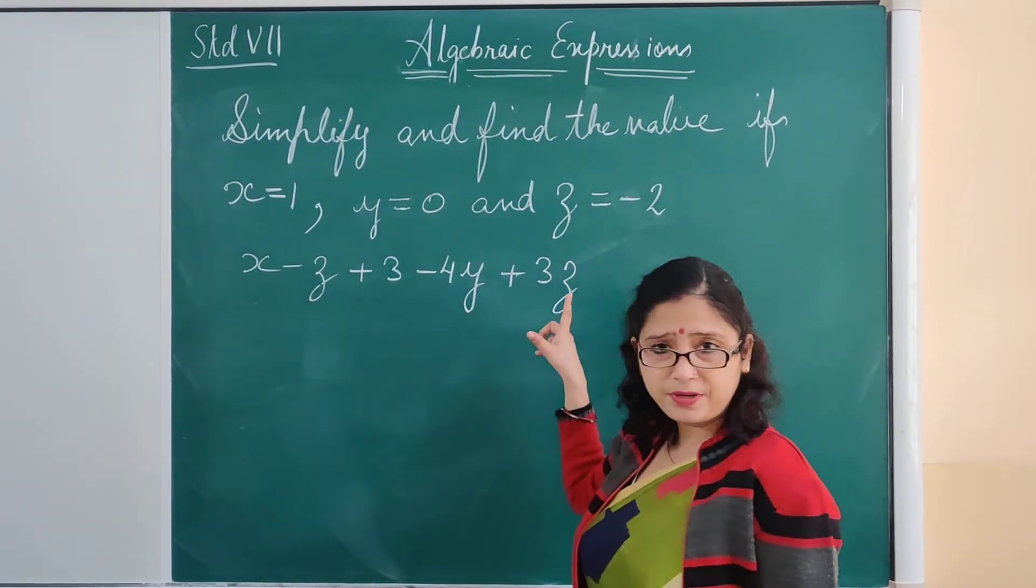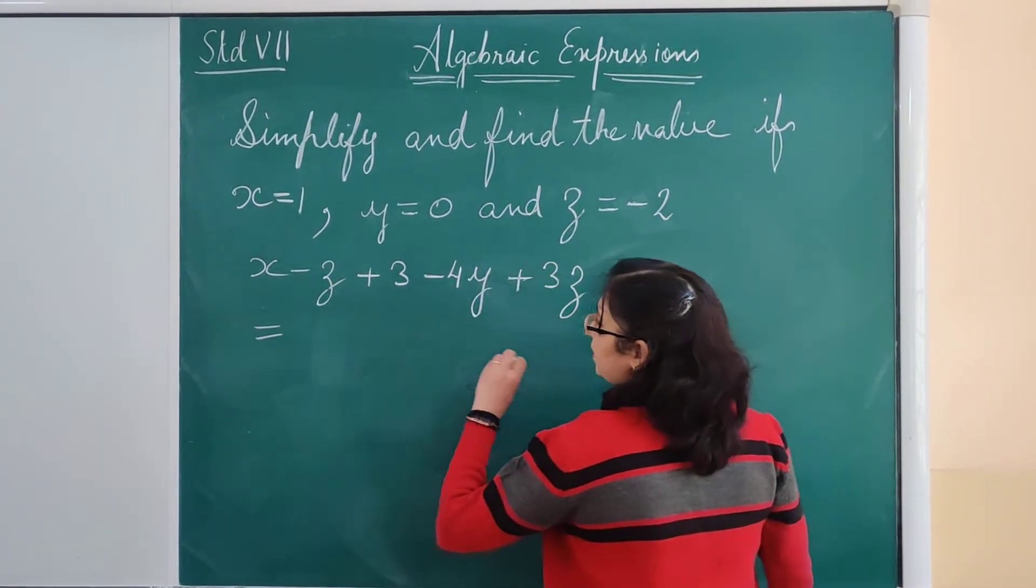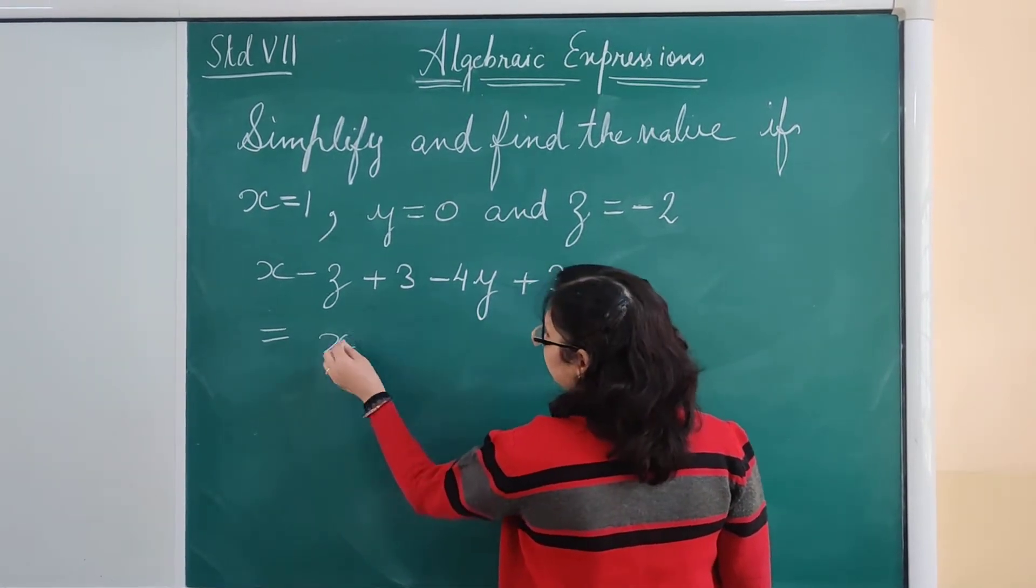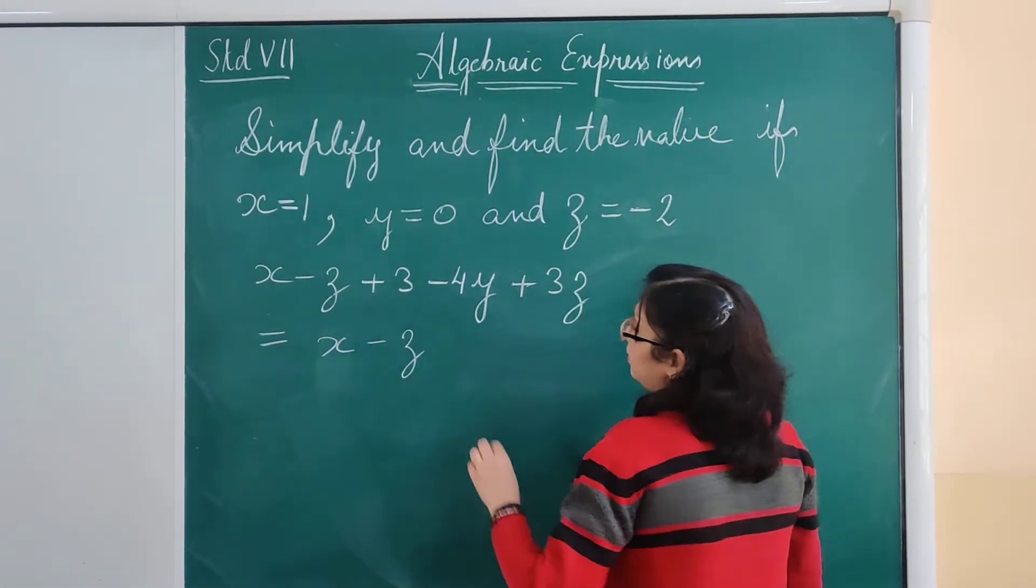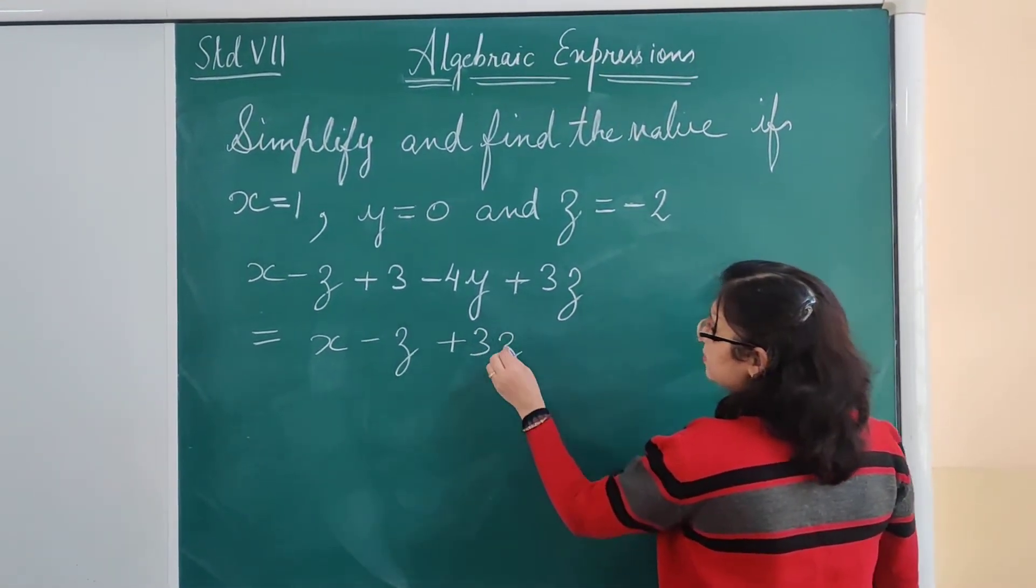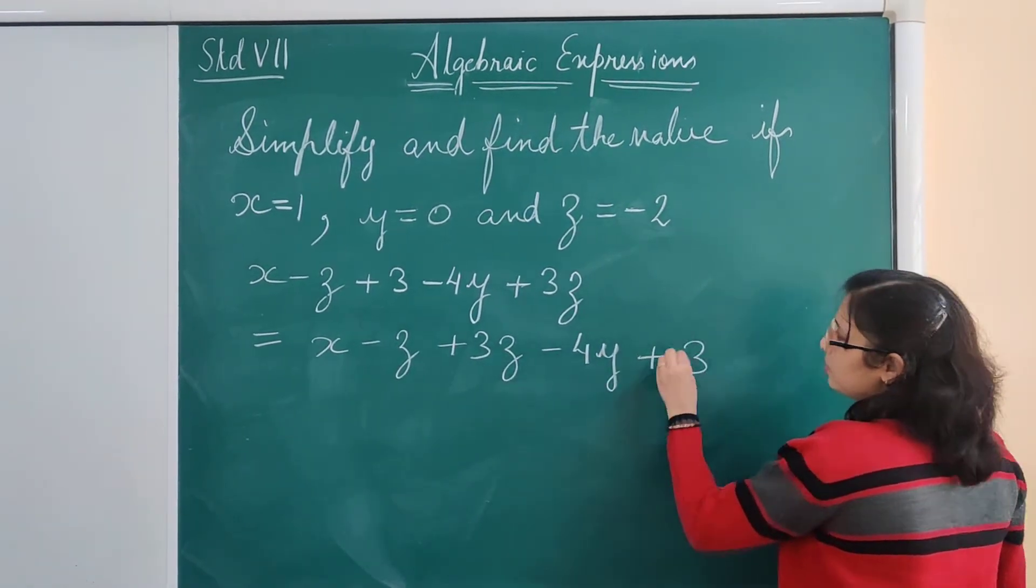Now let's first simplify this algebraic expression. For simplifying, we will bring all the like terms together first. x minus z plus 3z minus 4y plus 3.